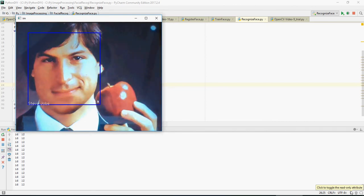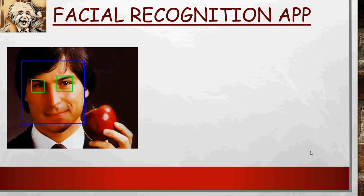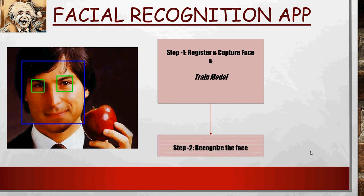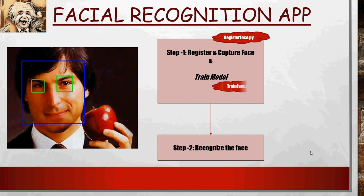In order to identify the faces, what we're going to do is register and capture the face. First you have to register the face, then train the model so that it understands whose face it belongs to. Next we are going to recognize the face. This is done using register_face.py, train_face.py, and recognize_face.py — register, train, and recognize.